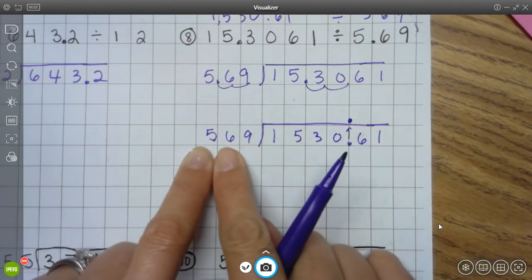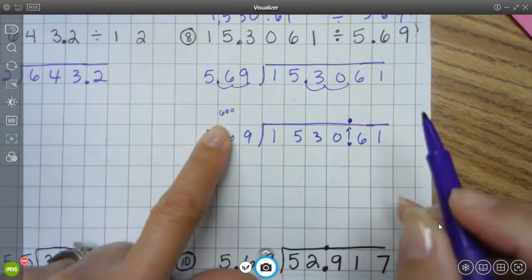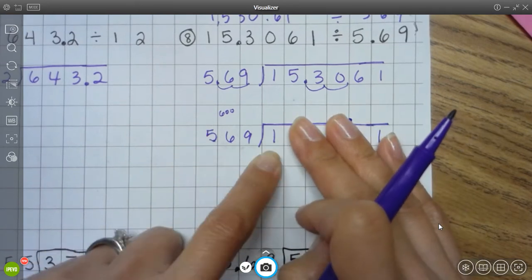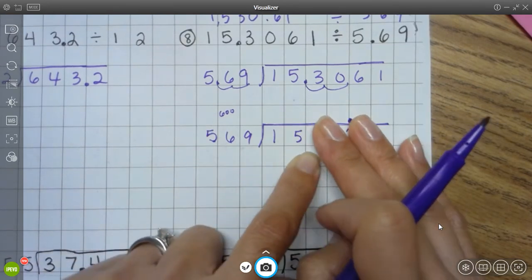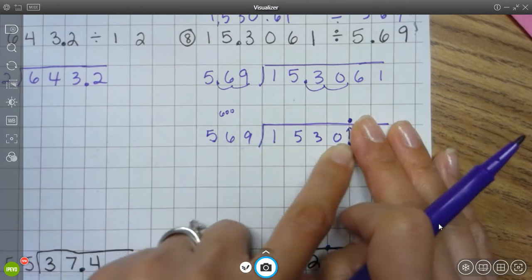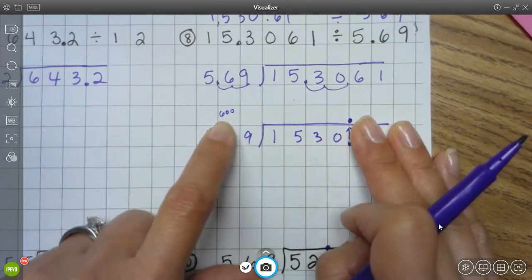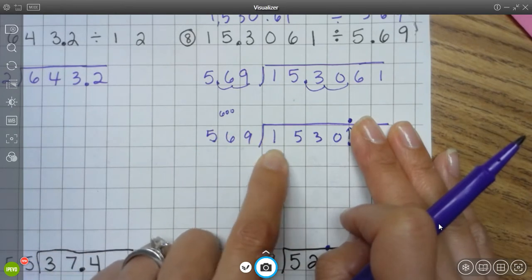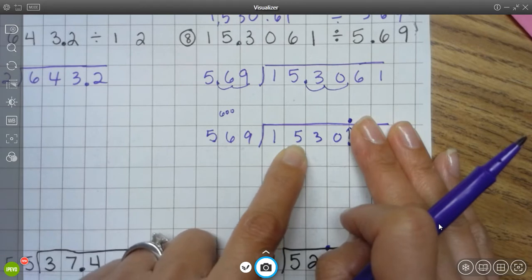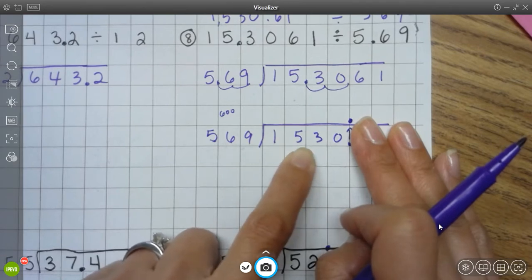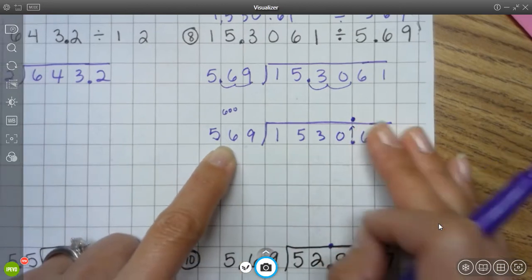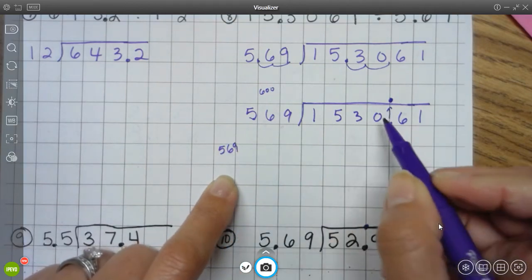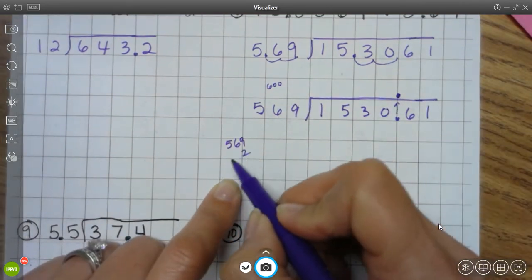So if I think this is 600 and I focus on the number 6, 6 times what number is going to get me close to, well, let's think about this. 569 does not go into 1, it doesn't go into 15, it doesn't even go into 153. So I'm looking at the first four numbers. I need to think to myself, 6 times what number is going to get me close to 15? 6 times 2 is 12. 6 times 3 is 18. Okay, which would put me over. So I'm thinking 569 times 2 is going to get me as close to 1530 rather than going over. So let's go ahead and do that.